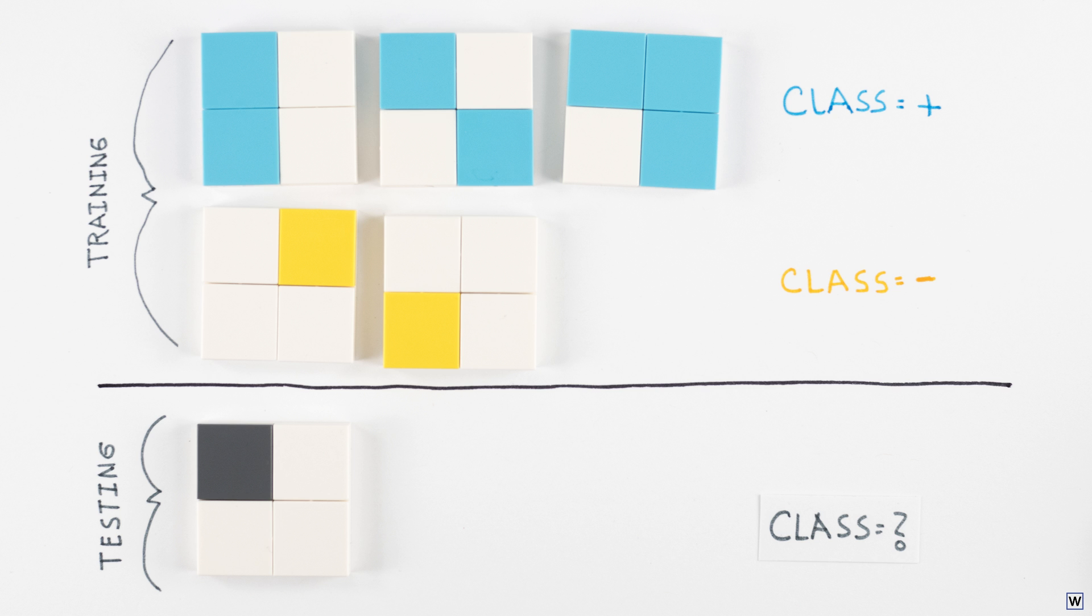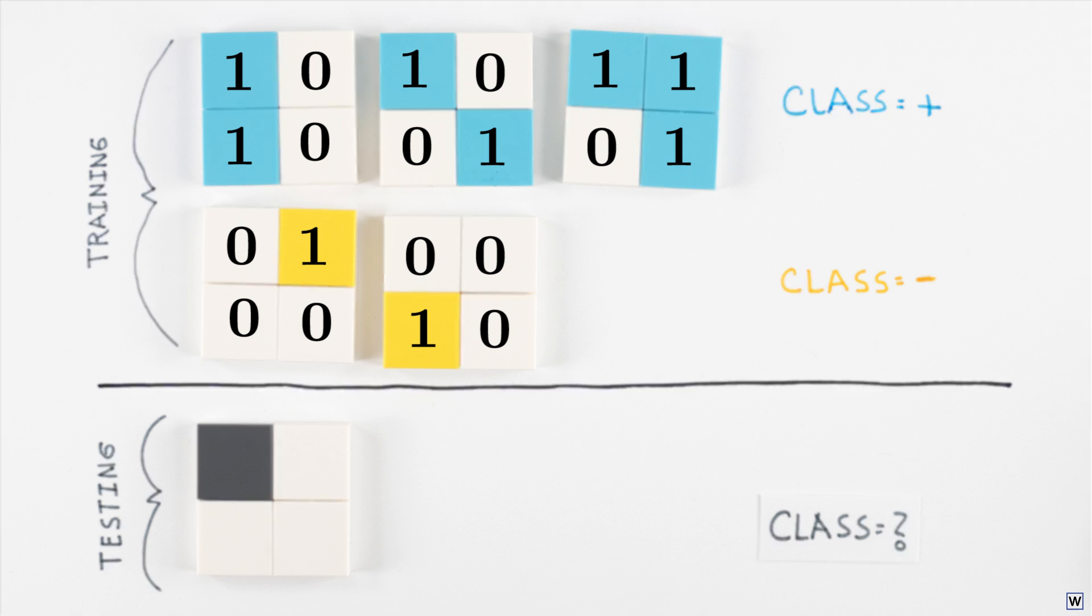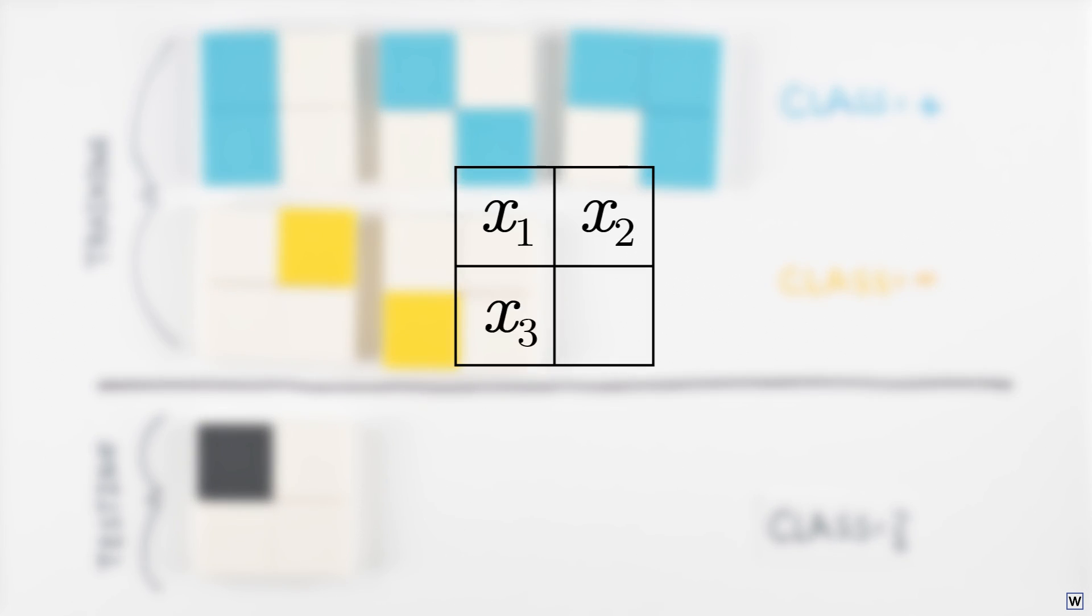Just as in our finger data, colored in squares correspond to ones and empty squares correspond to zeros. However, we now just have four variables to consider. We'll call them x1, x2, x3, and x4, or collectively x.